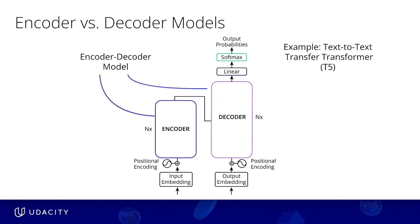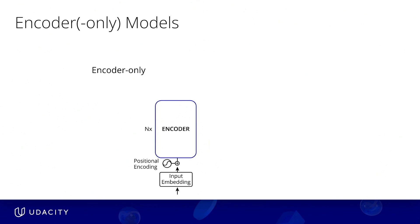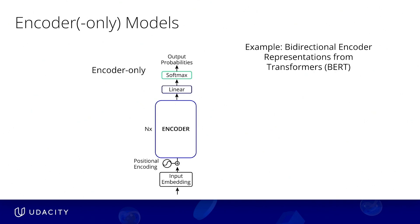However, the first transformer-based models to gain broad adoption used only the encoder block of the transformer. Here, chopping off the decoder block, but taking the linear and softmax layers from the decoder block, we now have the basic architecture for the BERT model, short for bi-directional encoder representation from transformers.